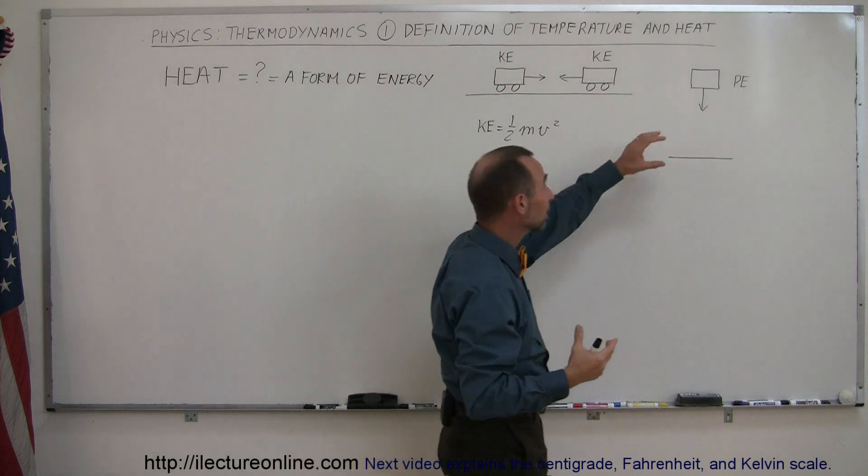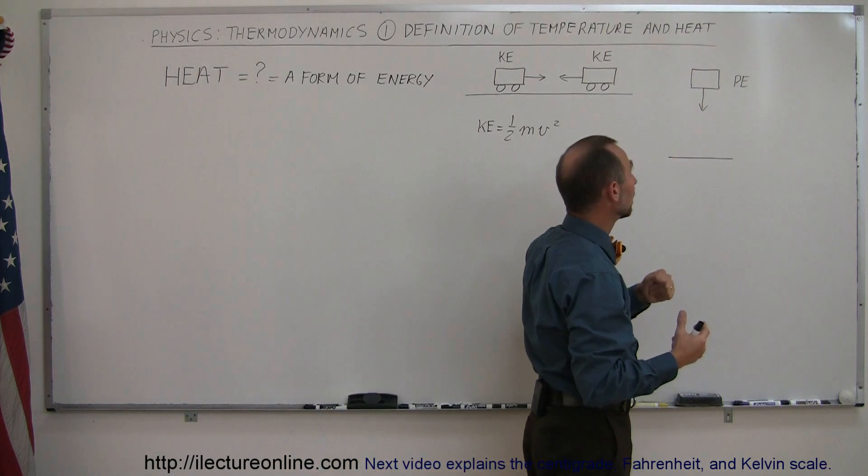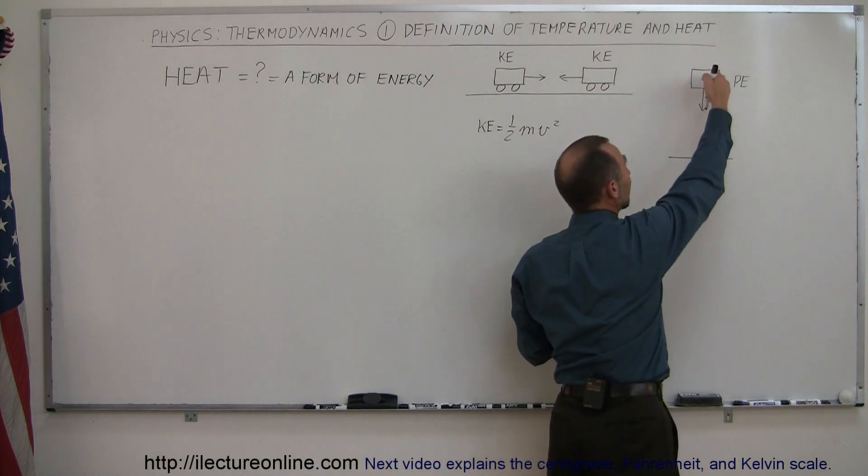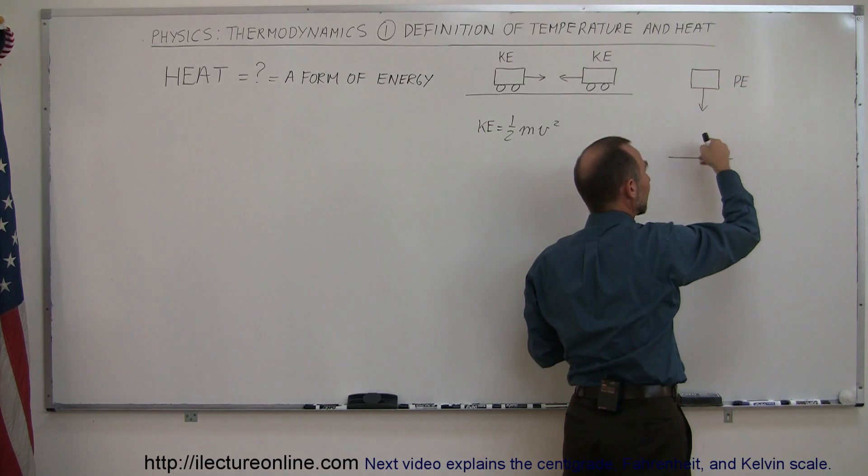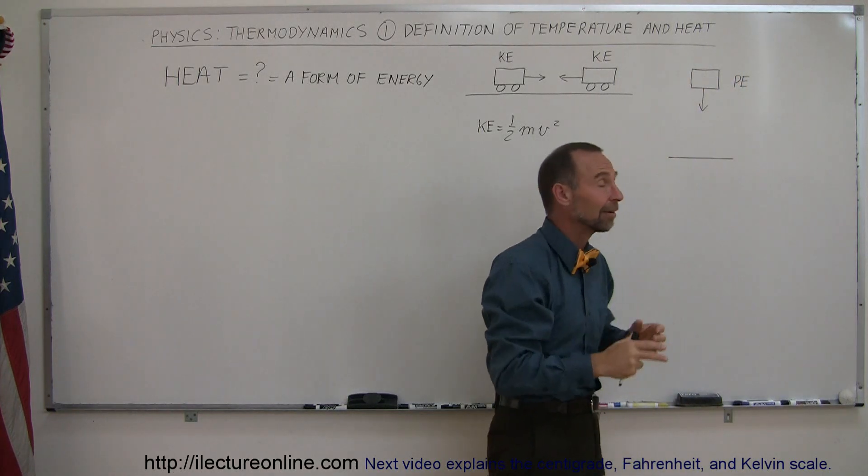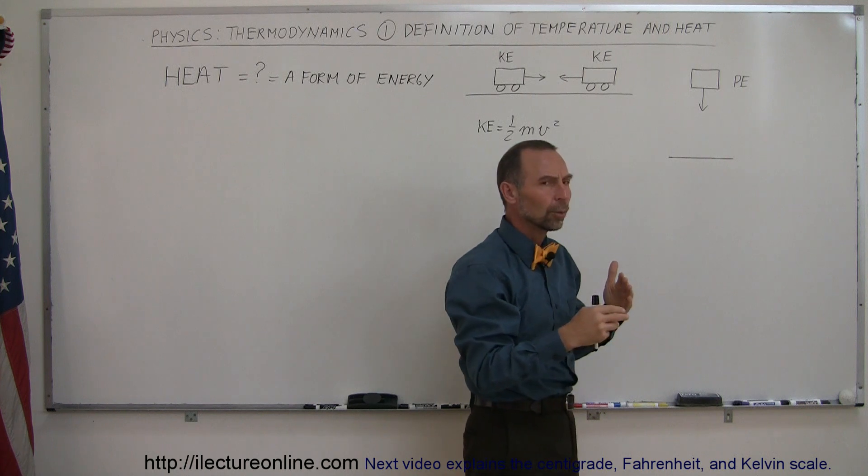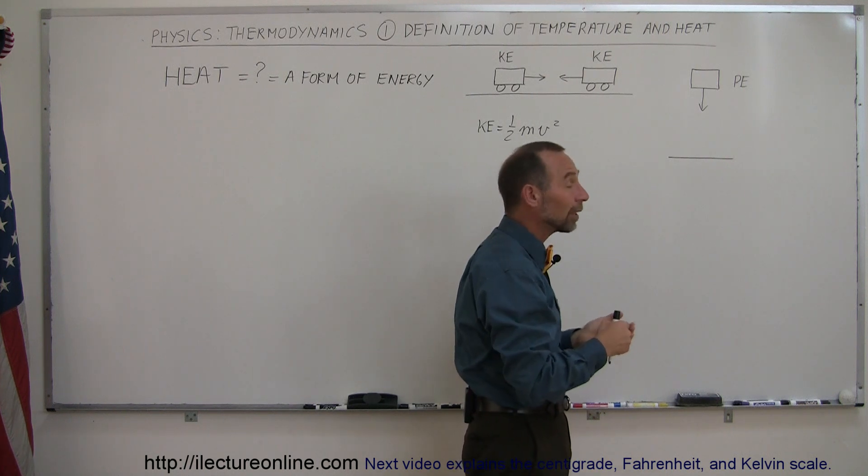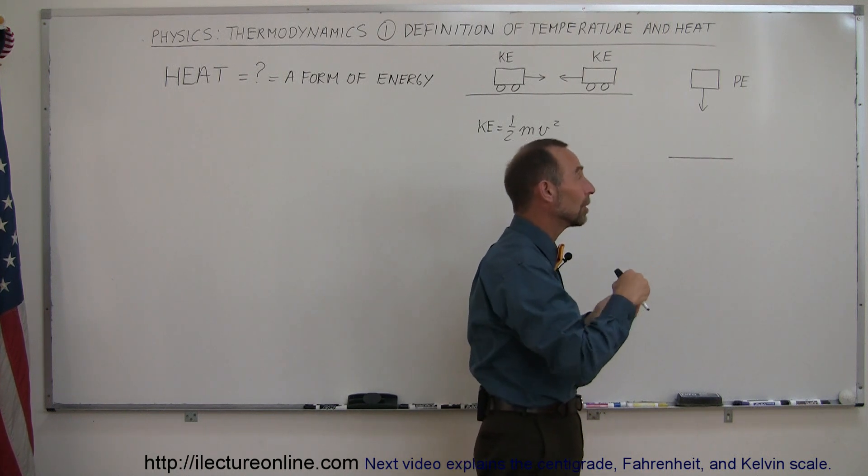What if we have an object like this and we drop it on the floor? And so it has potential energy and then you let go. It turns potential energy into kinetic energy. But when it hits the floor and then sits there after it hits the floor, where did all that potential energy go? Well, also, it has turned to heat.